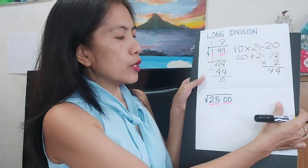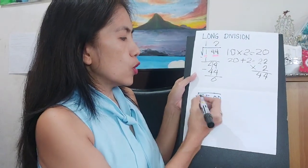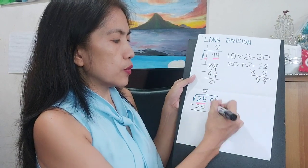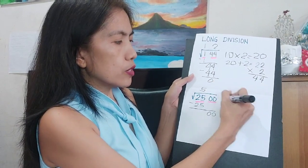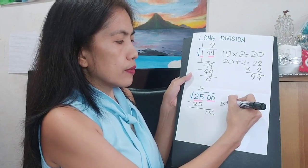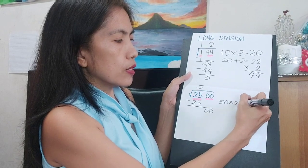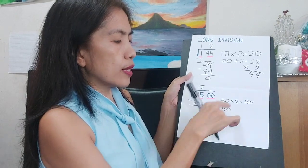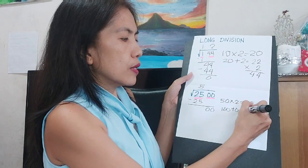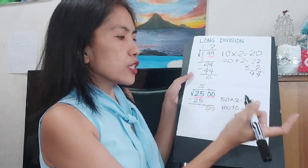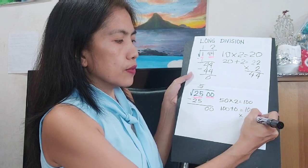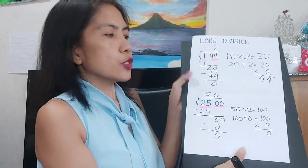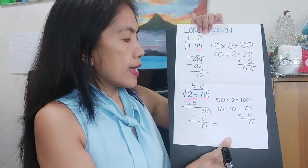Next, find the square root of 2,500. Group the digits: 25 and 00. The square root of 25 is 5. 5 times 5 is 25. 25 minus 25 is 0. Bring down 00. Take the 5, annex 0, and double to get 100. Divide 0 by 100 — quotient is 0. 100 plus 0 is 100. 100 times 0 is 0. So the square root of 2,500 is 50.